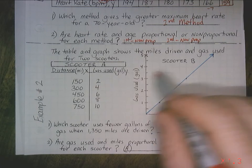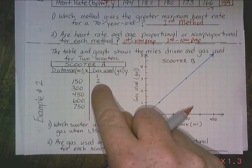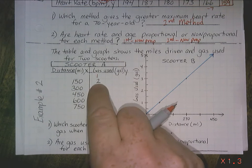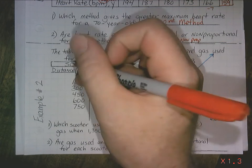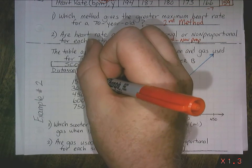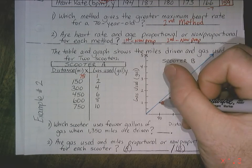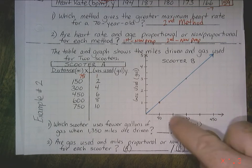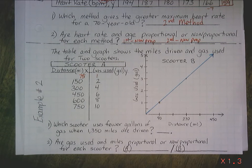You can create one for 1 gallon here, find the unit rate. If it takes 2 gallons to go 150 miles, then you know if you divide 150 by 2, you get that 1 gallon rate, that unit rate. So when you divide that by 2, you get 75. So it means it's 75 miles to 1 gallon for scooter A. Well, if you look here, 1 gallon for scooter B is 90 miles. So scooter B is going to go 15 more miles than this one, than scooter A.